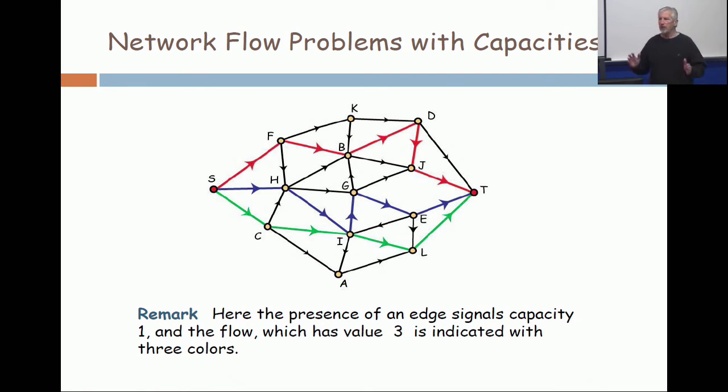Is it clear to everybody that in the special case where capacities have one, I don't really need numbers. All edges have capacity one, and what's the flow value? The flow value on an edge is one if it has a color, and is zero if it doesn't.